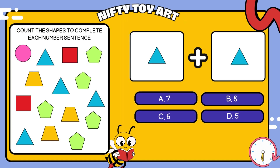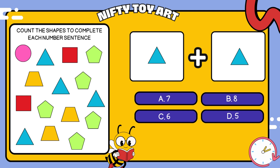I have a triangle plus triangle. How many all together? That's right, eight.